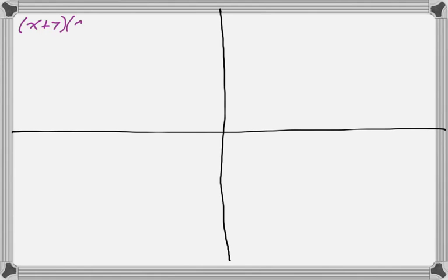Let's look at an example here. So I've got x plus 7 times x minus 7. So I'm going to square the first. That's x squared. Square the last is 49. Subtract them. So x squared minus 49.